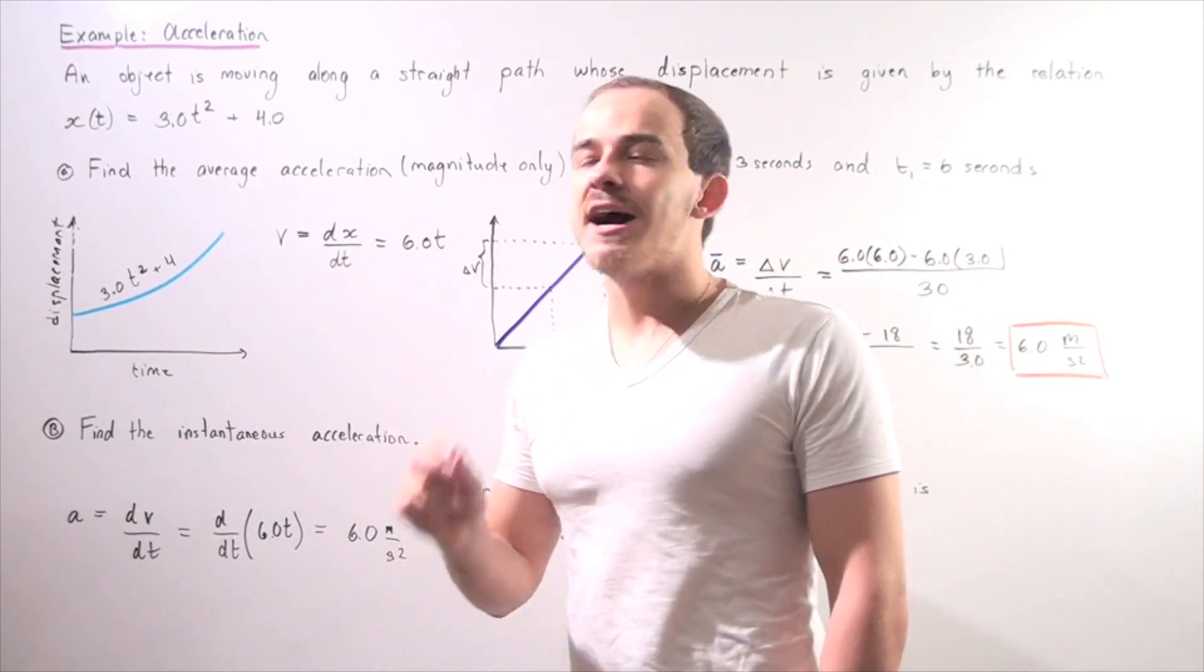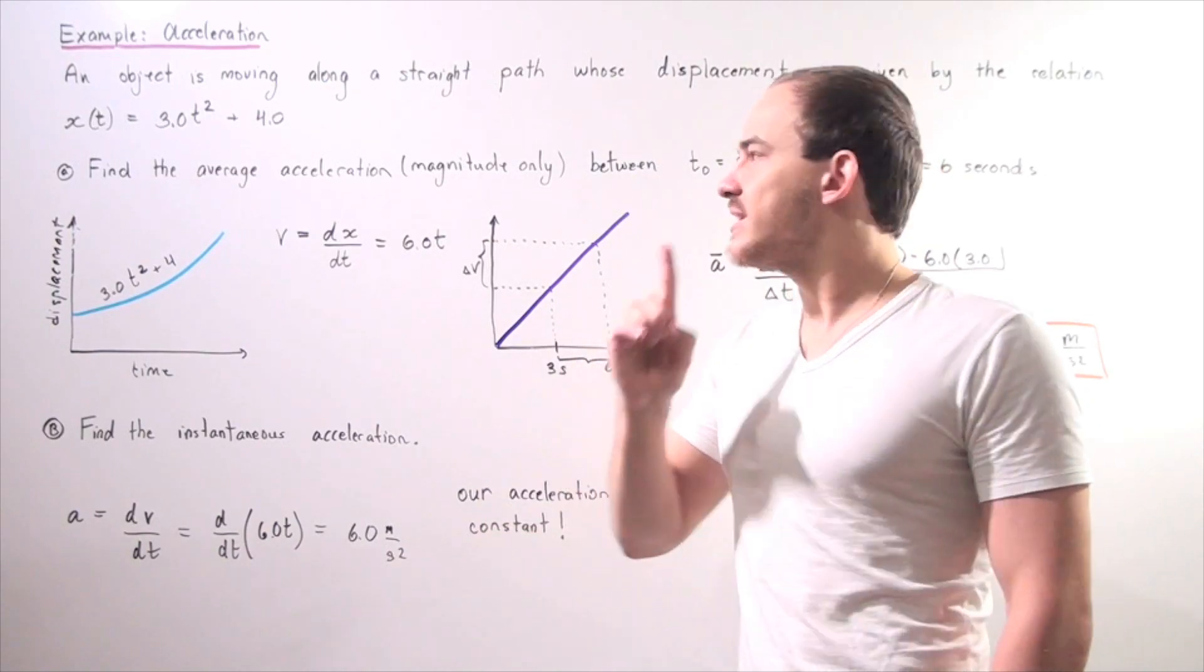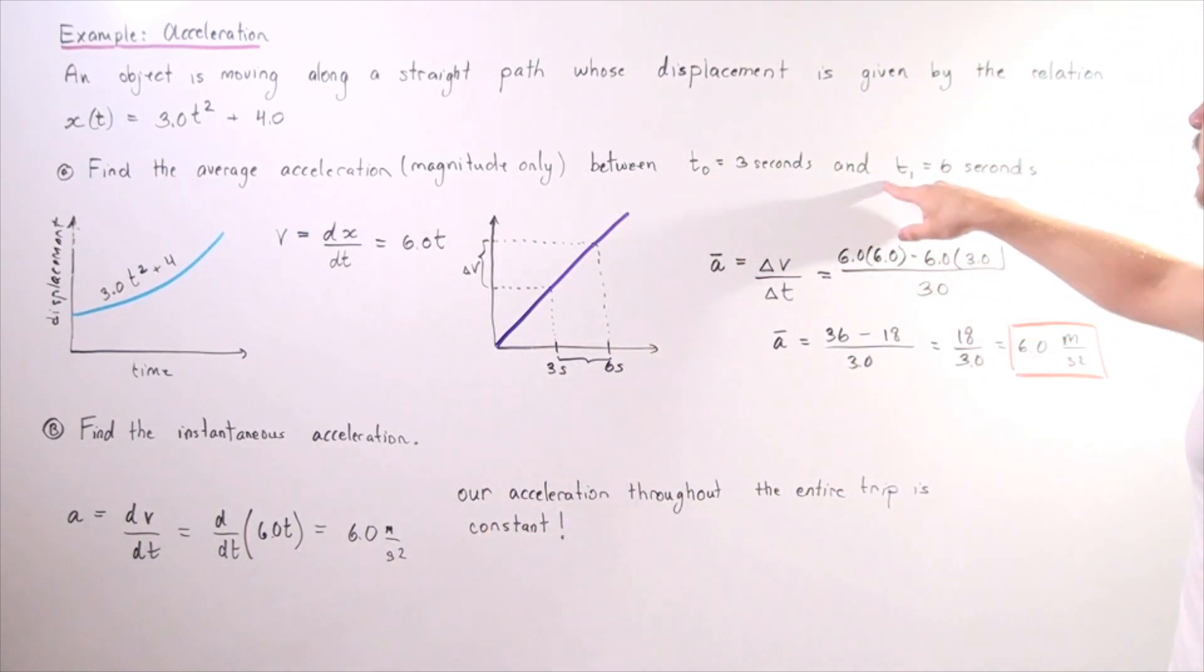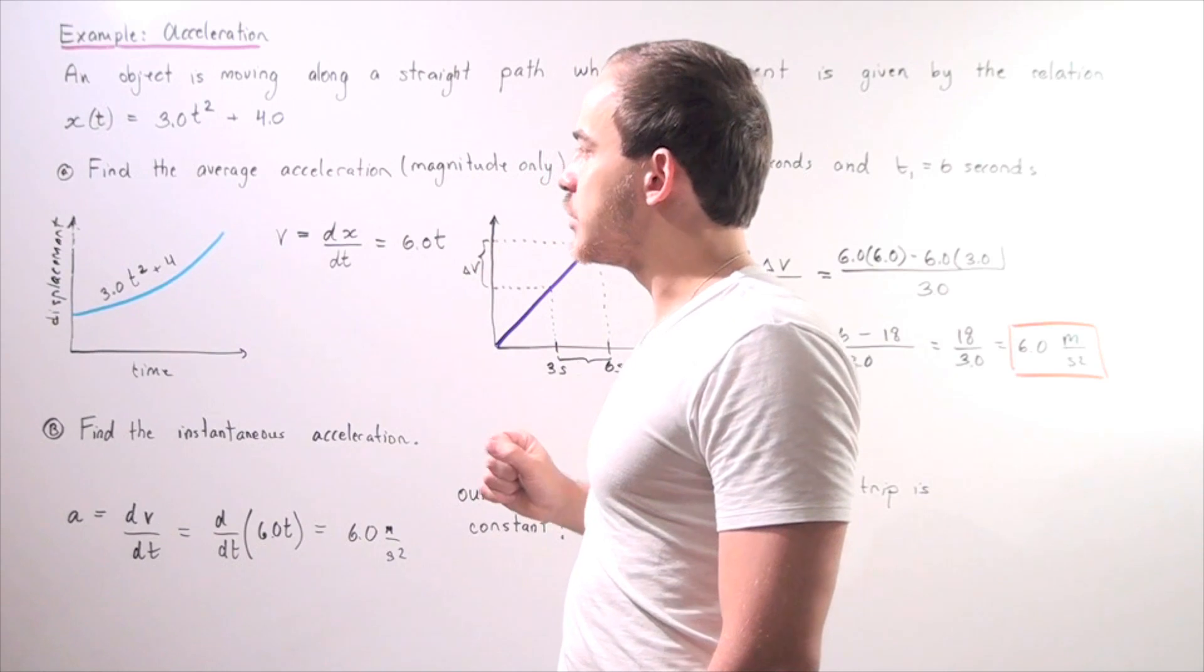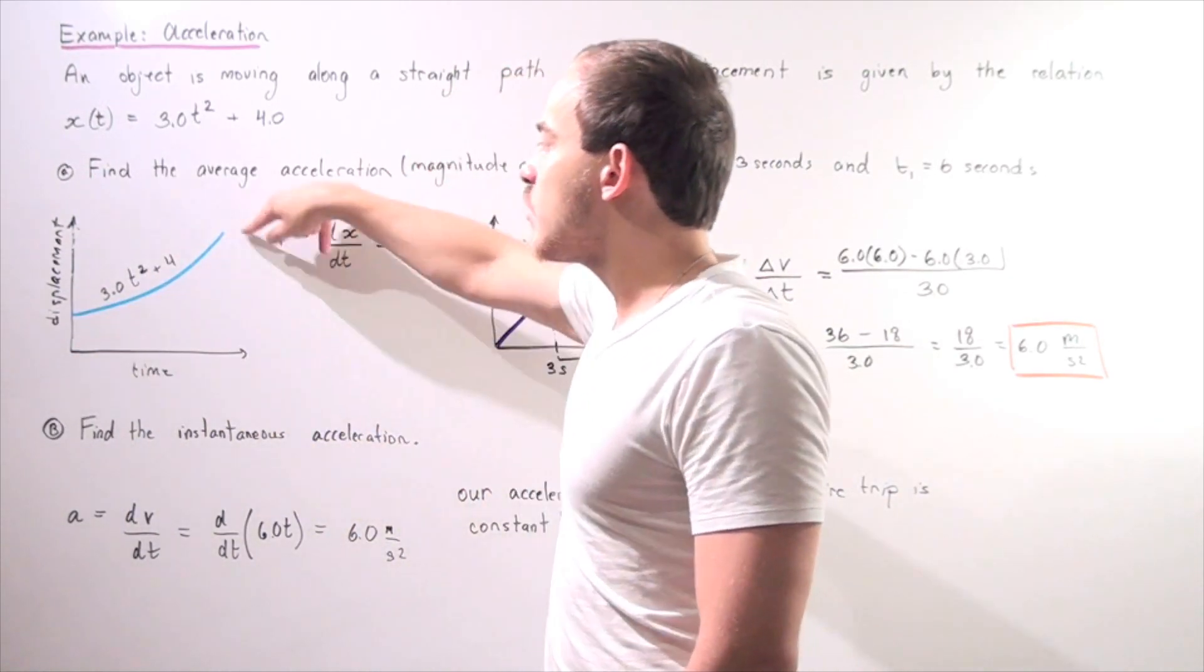In part A, we want to find the magnitude of our average acceleration between the time interval of t₀ = 3 seconds to t₁ = 6 seconds. So if we graph our displacement function, displacement versus time, we get the following relationship.